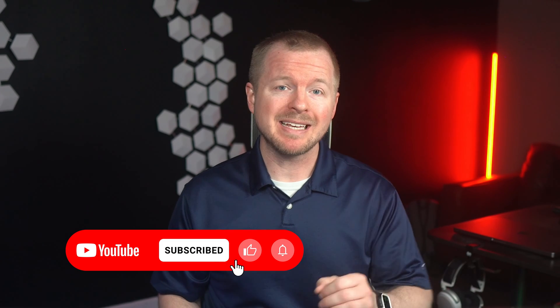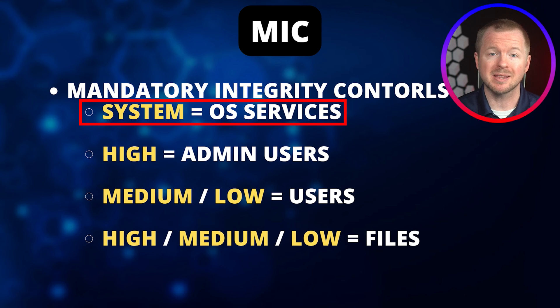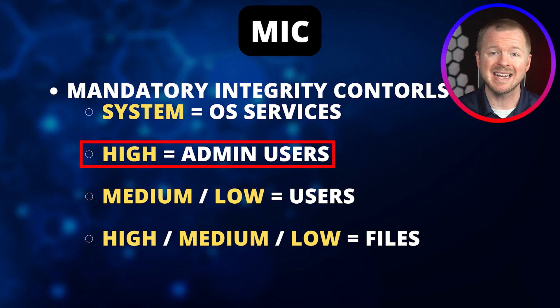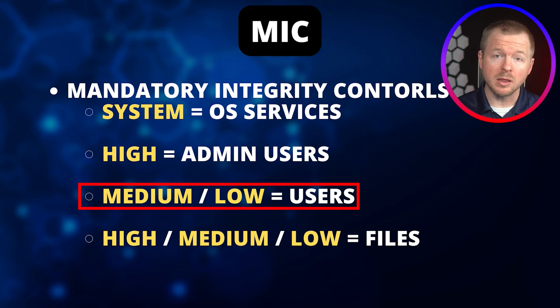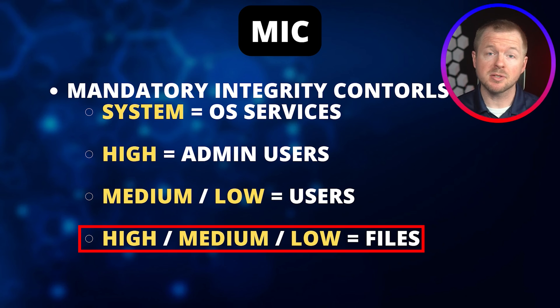Mandatory Integrity Controls, or MICs, are something that Windows uses to prevent users and processes that have one level of trust from modifying files at another level of trust. A good example is Internet Explorer trying to modify operating system files in the System32 directory. Operating system services operate with a system integrity level. Administrative users are assigned a high integrity level. Unprivileged users are assigned either a medium or low integrity level, with medium being the default. The operating system will reduce the integrity level of users for specific activities like browsing the web or reading emails.